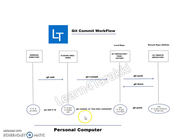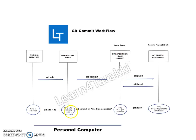The staging area just marks the files that will be moved into the local repository when you issue the commit command. Then only those files which are in the staging area get committed. As shown in this image, F1 and F2 get committed, but not F3 — F3 remains in the working directory. Files in staging are marked in green color and F3 would be in red color.